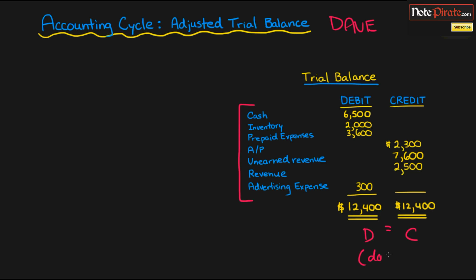And of course, this is because of our double-entry accounting system, where for every transaction we must have a certain amount of debits for a certain amount of credits, where the debits actually equal the credits for every transaction. So now that we have looked at our original trial balance, let's look at those adjusted entries that we created in the preceding presentations.